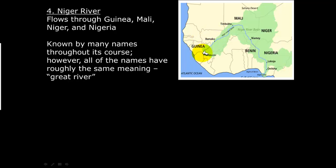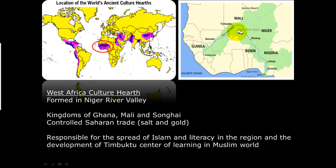The fourth waterway is the Niger River, located along the West African coast. It flows through the countries of Guinea, Mali, Niger, and Nigeria. This river has been called many names throughout its history, but most of those names roughly translate to the same thing: 'the great river.' This aerial representation shows where the Niger River and its basin are located on the continent.